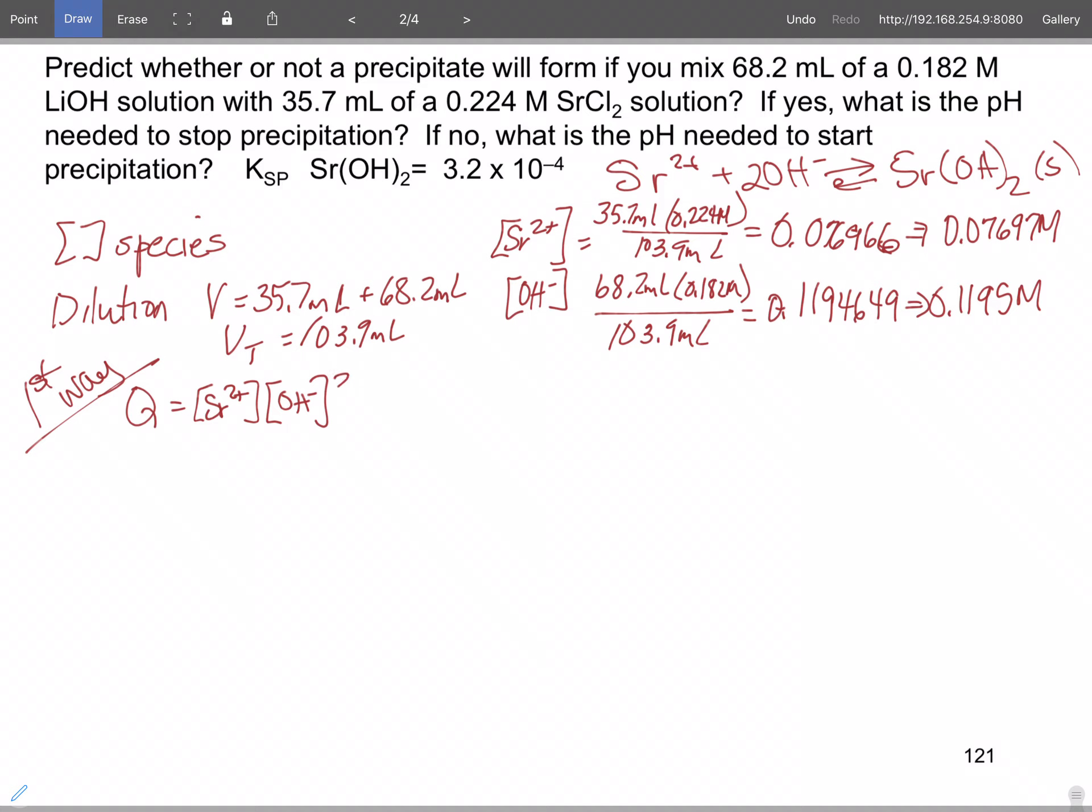So that's the 0.07697 times 0.1195 squared. So Q comes out equal to 0.00109915, which you could write as 1.0992 times 10 to the minus 3.